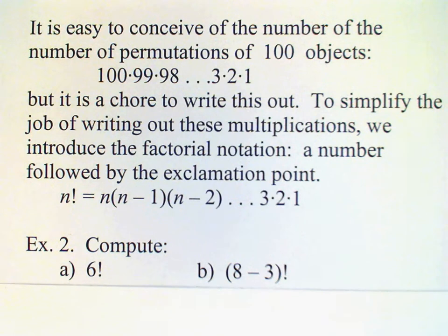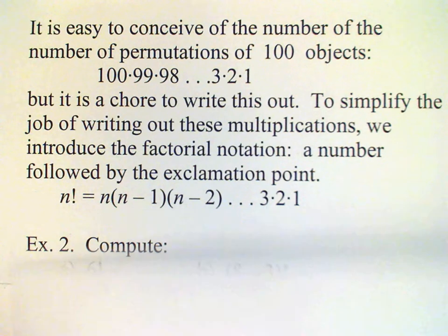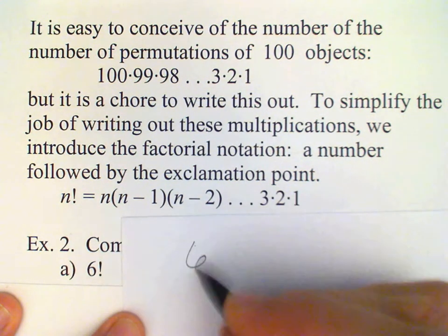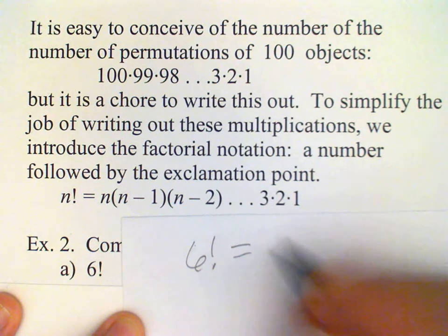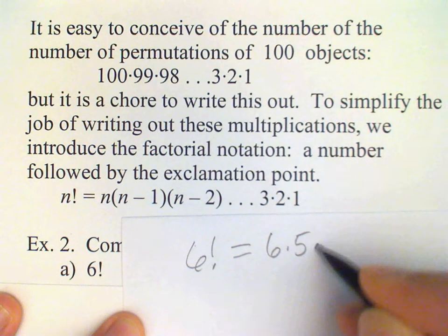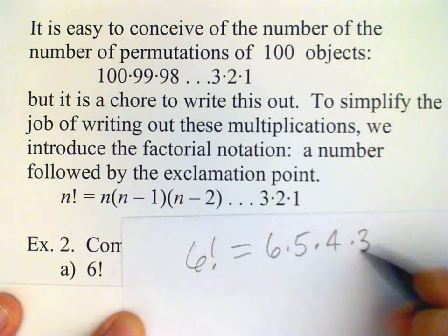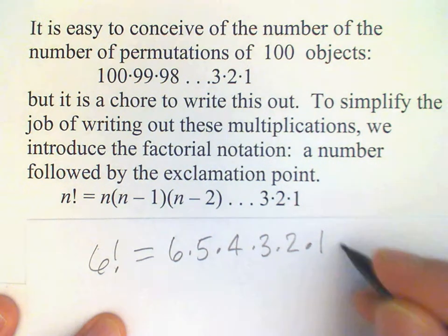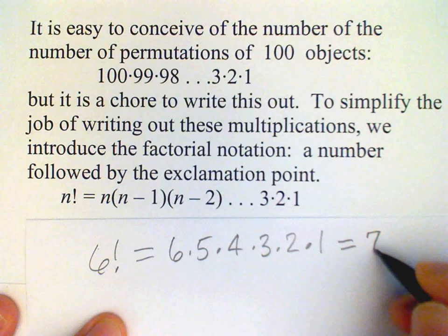So for example, we need to compute six factorial. Six factorial means six times five times four times three times two times one. And if you multiply these out, you get the answer which is 720.